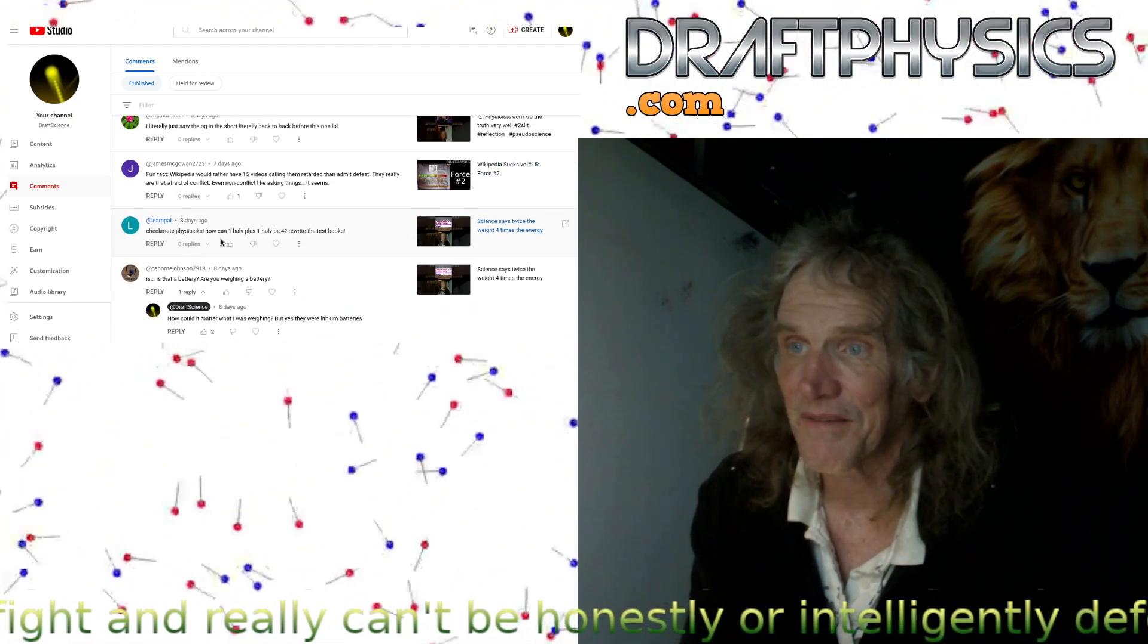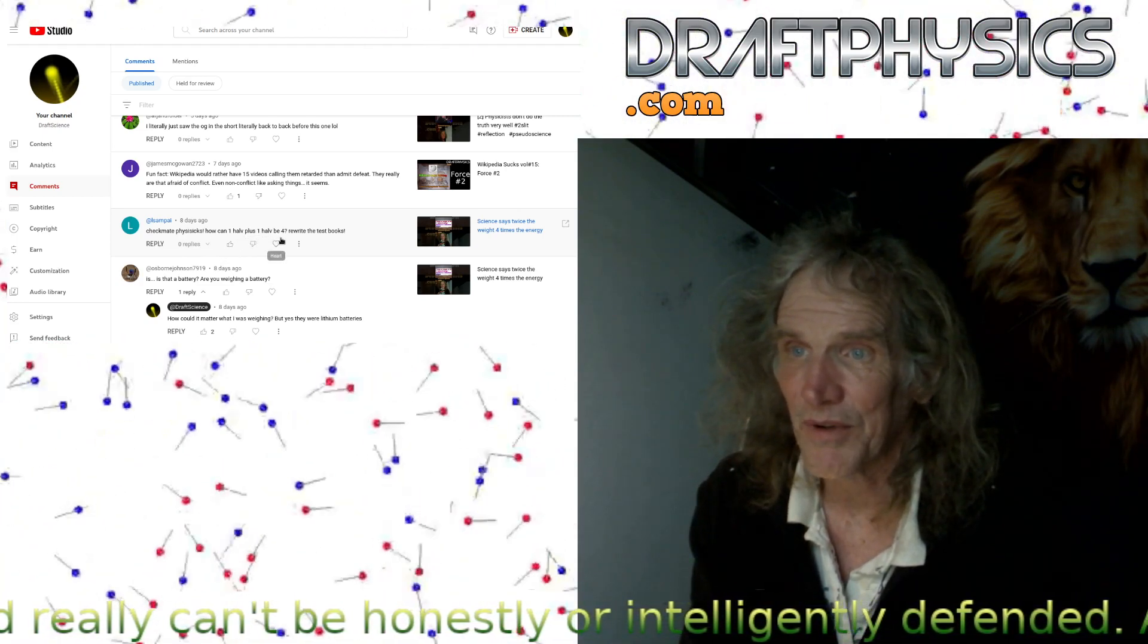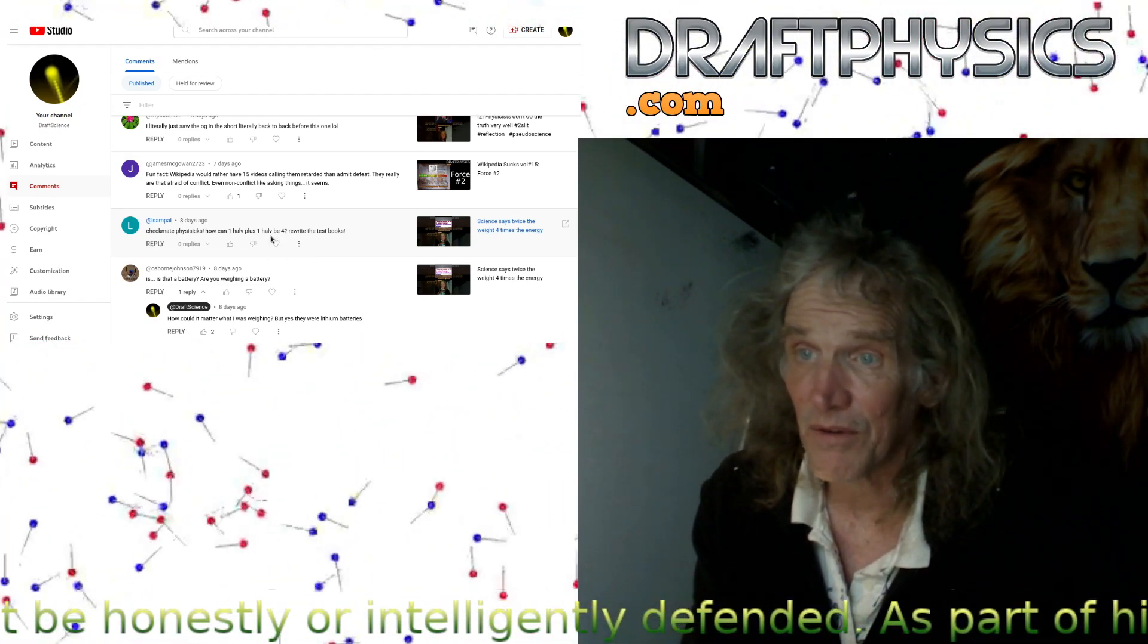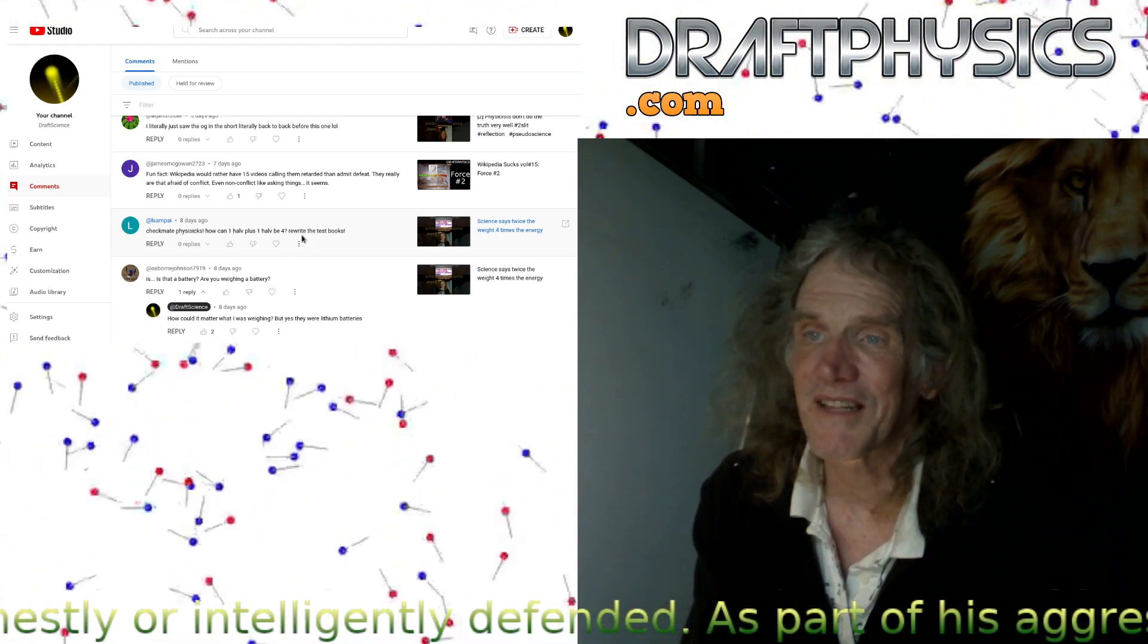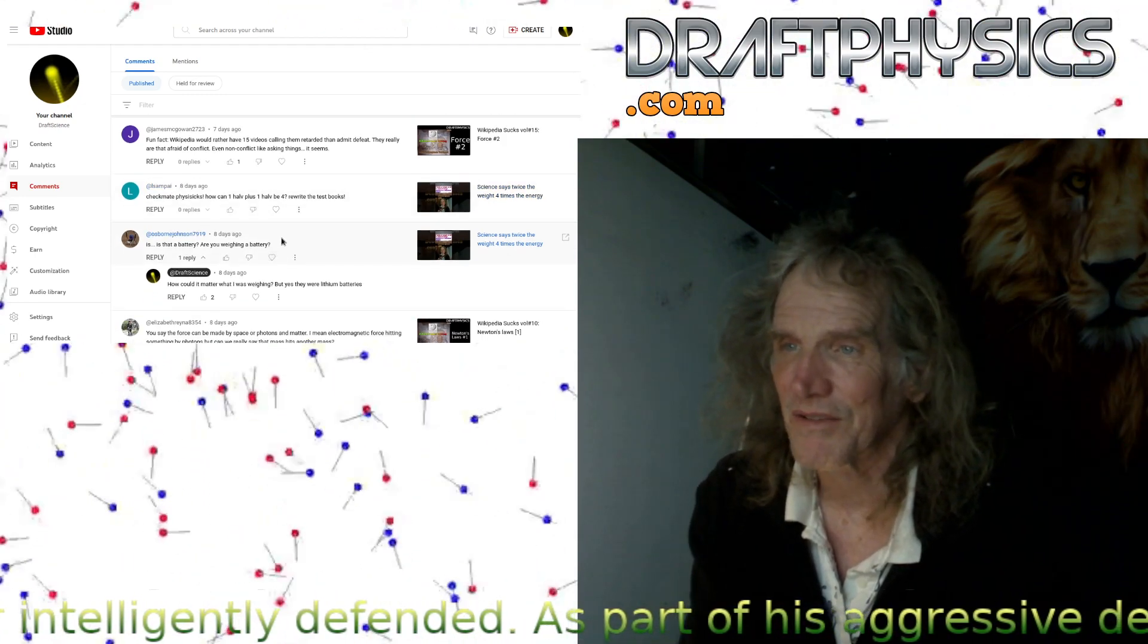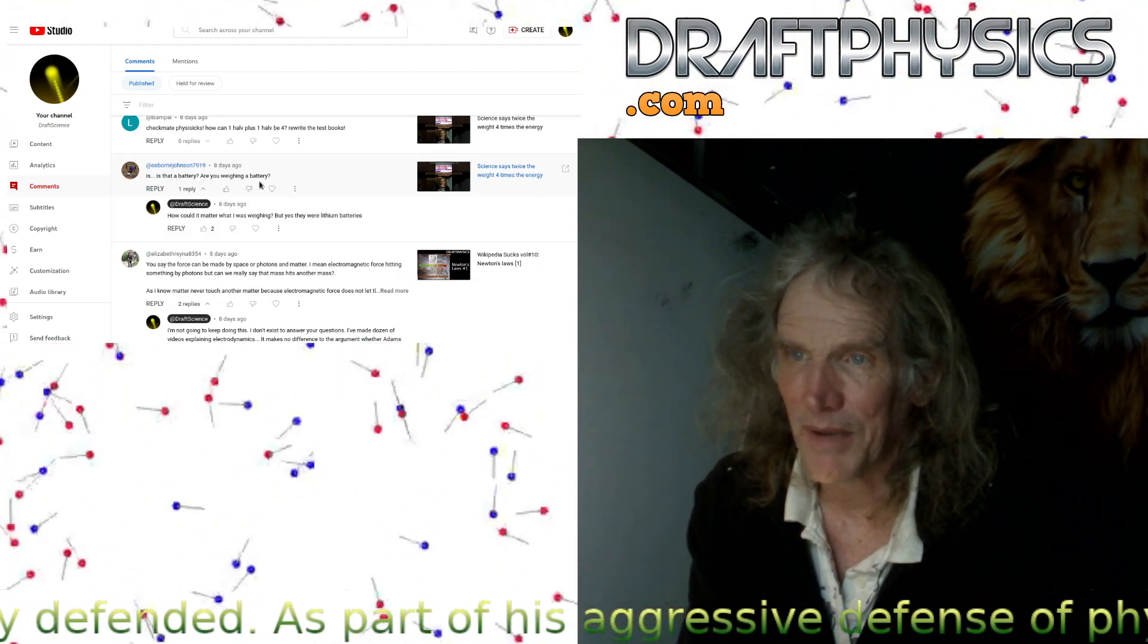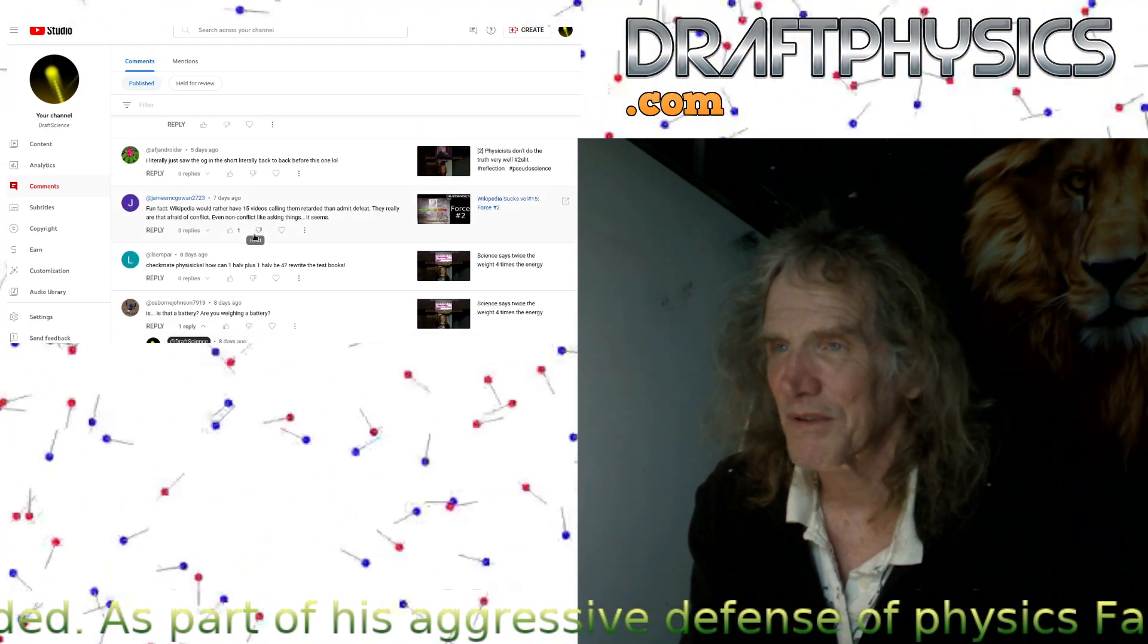Checkmate physicistis. How can one half plus one half before, I don't know what that is, one HLV. Hellvote. I don't know. Rewrite the textbook. So who knows what kind of troll behavior. Is that a battery? You are weighing a battery. Why would that be miraculous? I just, people are just so weird.